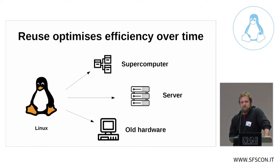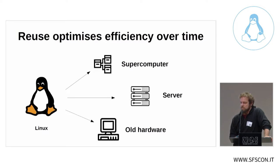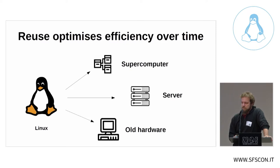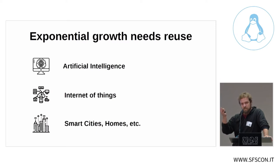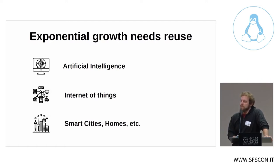Reuse also optimizes efficiency over time. The Linux kernel is used in the top 500 supercomputers in the world and on most servers on the internet. It also runs on old hardware, making it very dynamic and efficient. So reuse has a very positive benefit on software efficiency, which is important because software also needs energy to run — more efficient software is better in that regard.